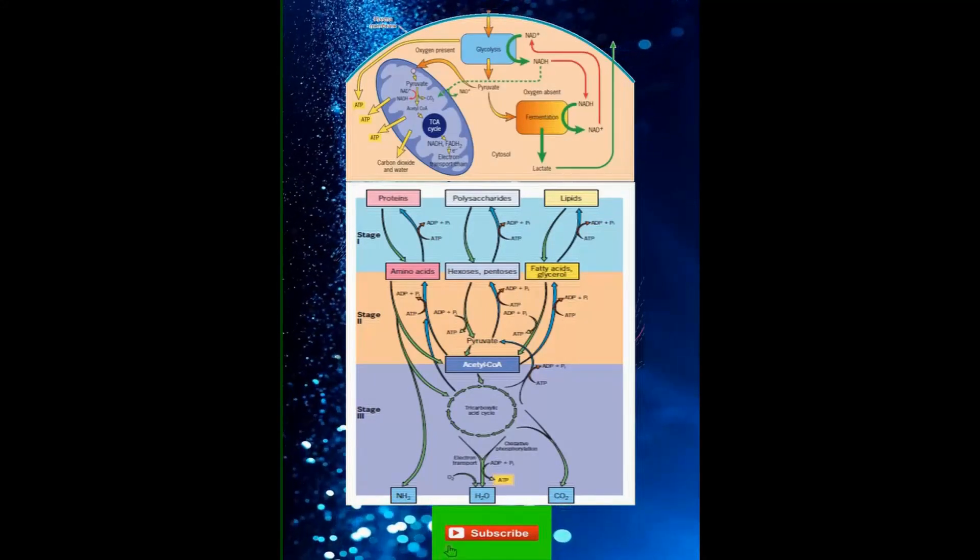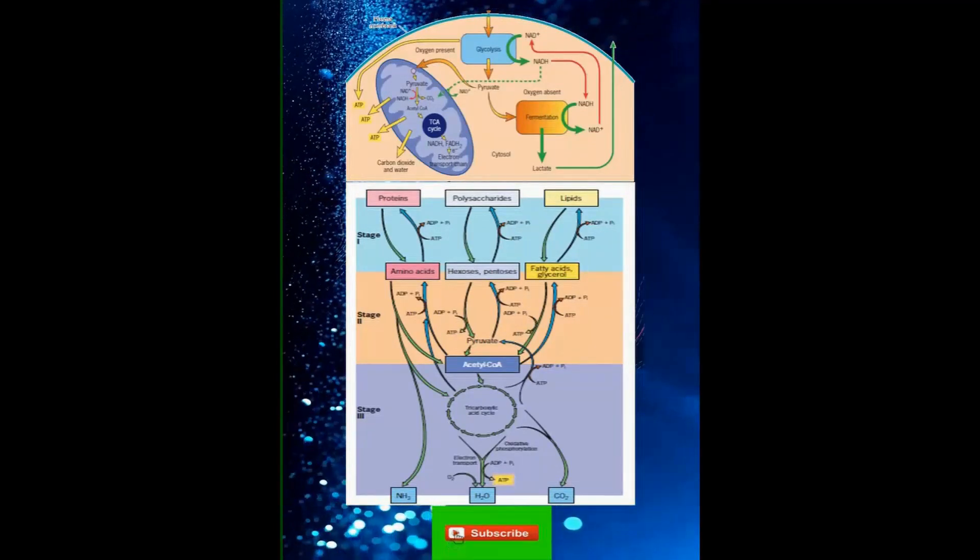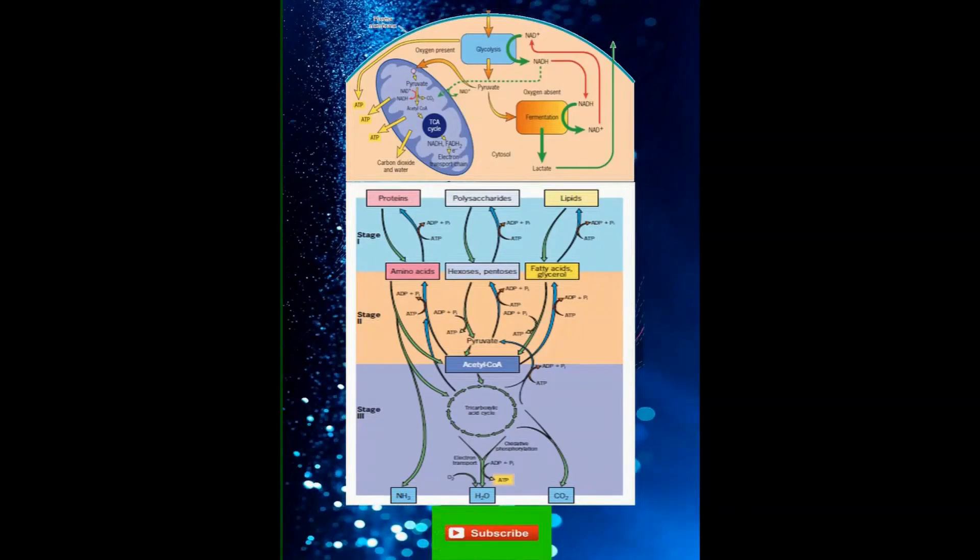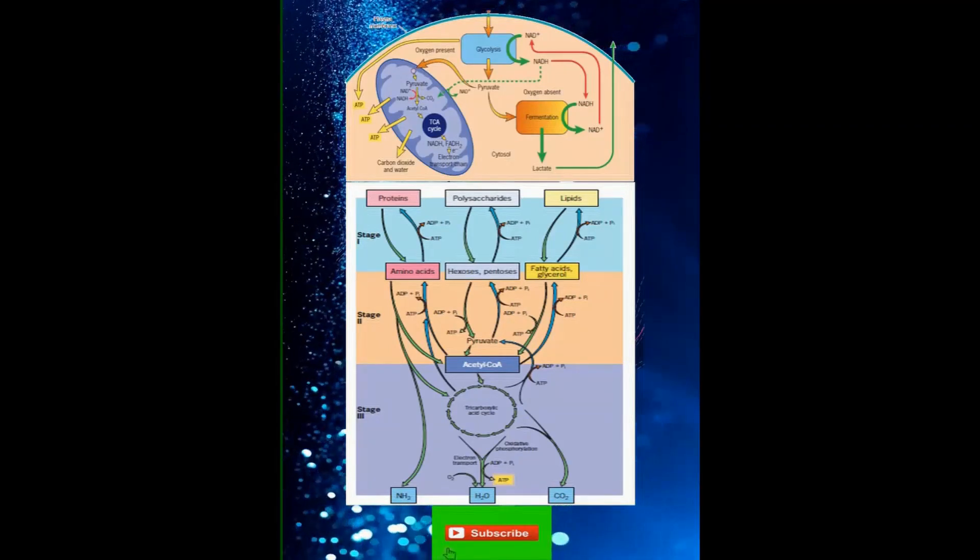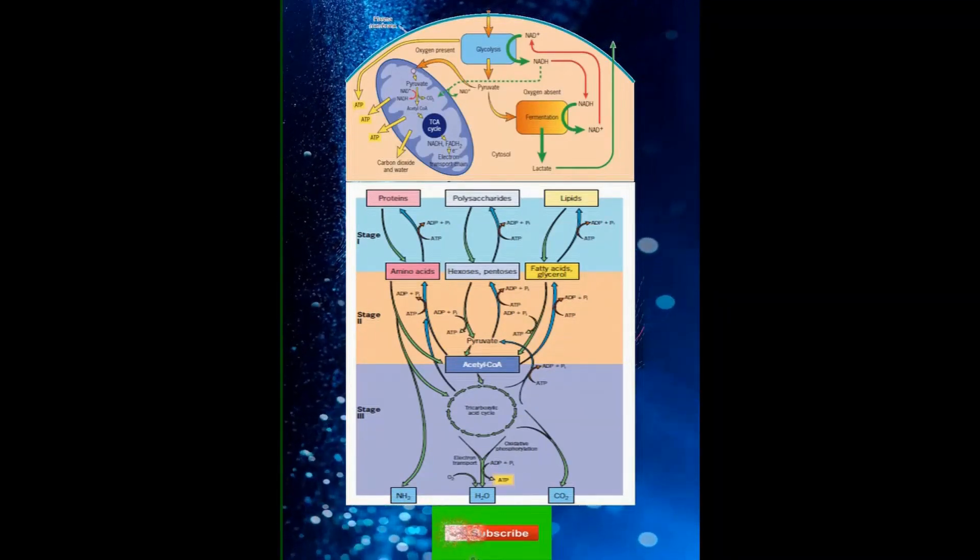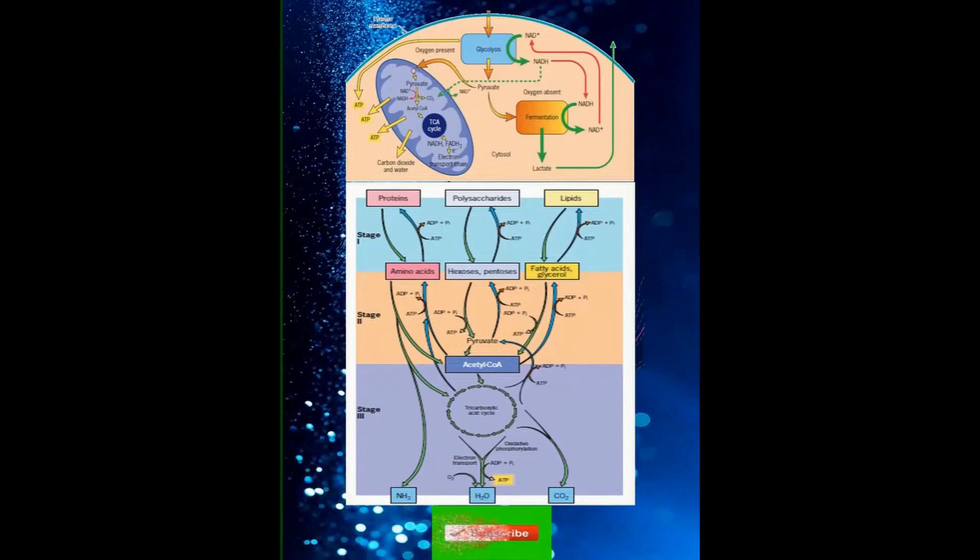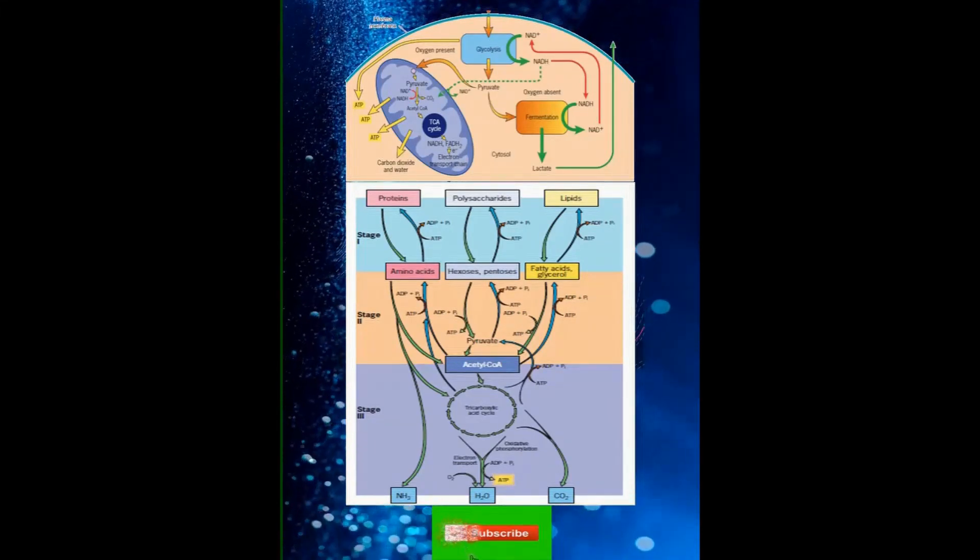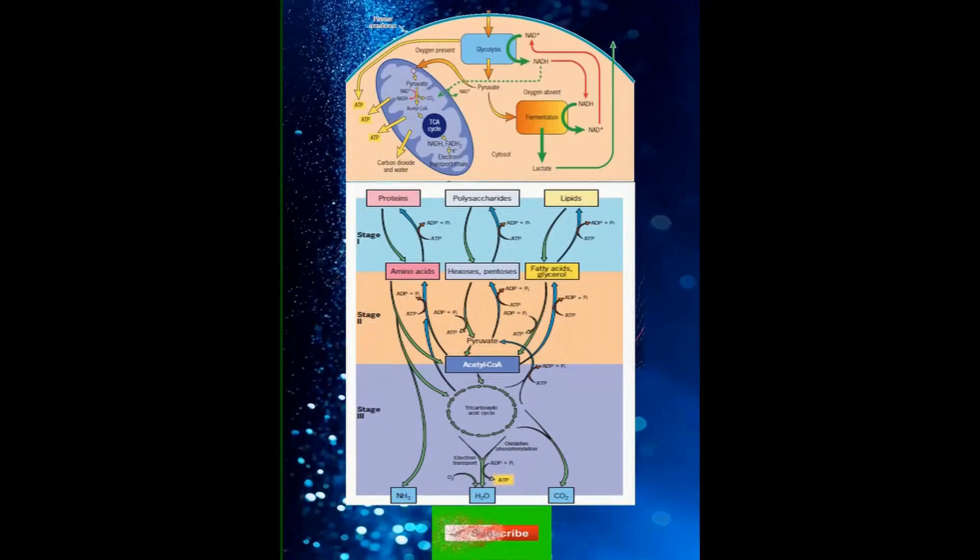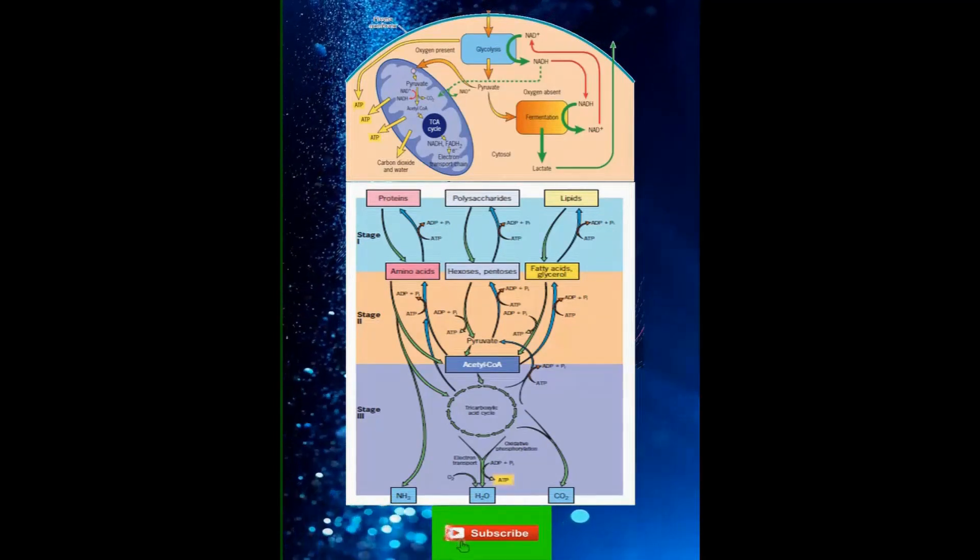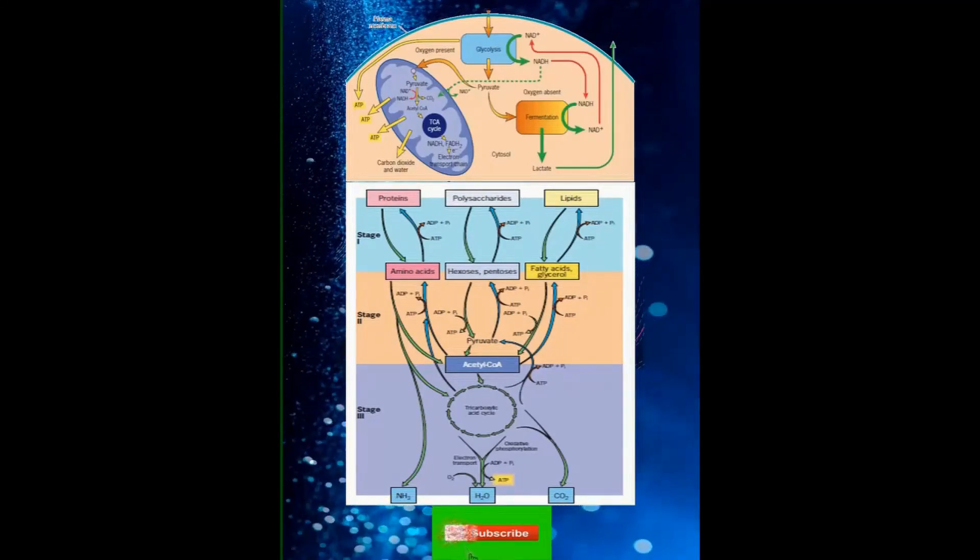Once macromolecules have been hydrolyzed into their components - amino acids, sugars and fatty acids - the cell can reutilize the building blocks directly to form other macromolecules of the same class, convert them into different compounds to make other products, or degrade them further as shown in stage 2 and stage 3 and extract a measure of their free energy content. The pathways for degradation of the diverse building blocks of macromolecules vary according to the type of compound being catabolized.